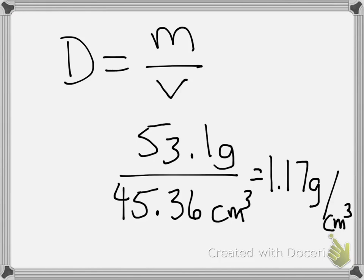So density could be grams per milliliters, or it could be grams per centimeters cubed, depending on if you were looking at a liquid or a solid substance.